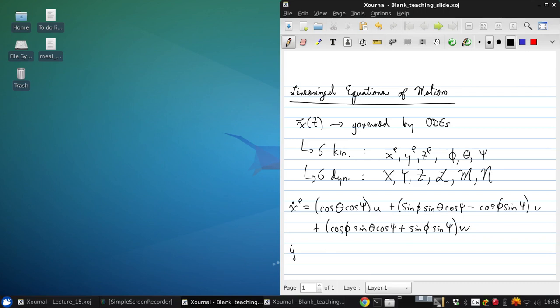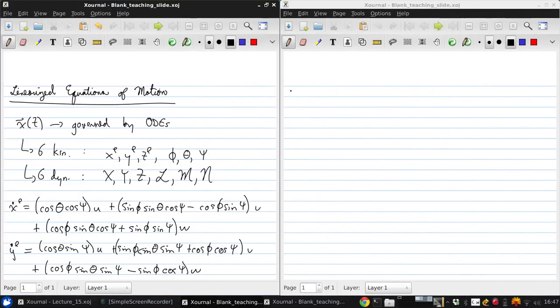X_E dot equals cosine theta cosine psi times U plus (sine phi sine theta cosine psi minus cosine phi sine psi) times V plus (cosine phi sine theta cosine psi plus sine phi sine psi) times W.